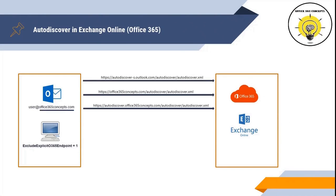The next Autodiscover lookup is autodiscover.domain.com. Outlook creates the URL https://autodiscover.domain.com/autodiscover/autodiscover.xml and tries to retrieve the Autodiscover payload. If Outlook doesn't retrieve the XML file from this URL, it moves to the next lookup process.